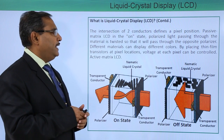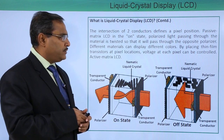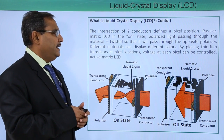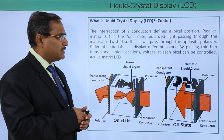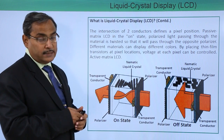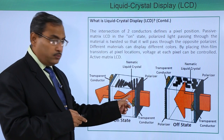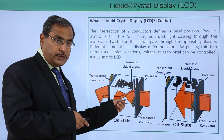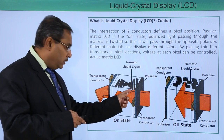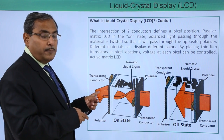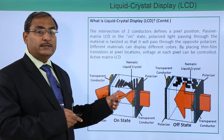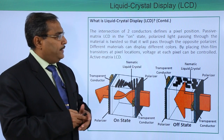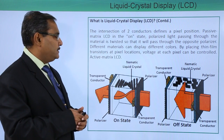In a passive matrix LCD, in the on state, polarized light passing through the material is twisted so that it can pass through the opposite polarizer. This light is going in, and now it has got twisted. To make the state on, the light will be passing out and the output will be obtained.